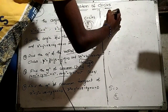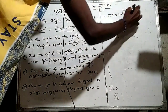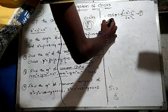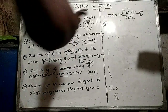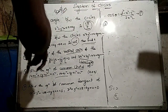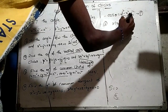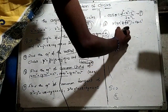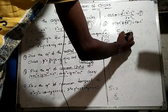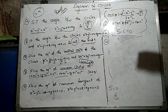First, the angle formula: cos theta equals d squared minus r1 squared minus r2 squared by 2r1 r2. Second, the orthogonal formula: 2gg-dash plus ff-dash equals c plus c-dash. Third, radical axis: s minus s-dash equals zero. Fourth, tangent: s minus s1 equals zero. With these four formulas you can answer every single question in this chapter on the system of circles — both 2-mark and 4-mark questions.